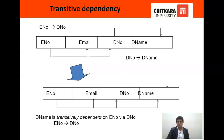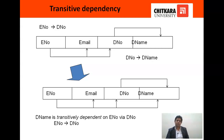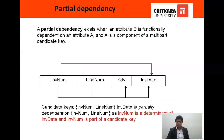Now we should know about transitive dependency. If A determines B and B determines C, then A can also determine C. This is known as transitive dependency, and we say that C is transitively dependent on A through B. This is an example of transitive dependency where employee number determines department number, and department number determines department name. So department name is transitively dependent on employee number through department number. Also there exists partial dependency, where more than one attribute determines another attribute.